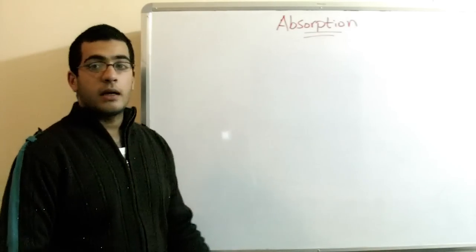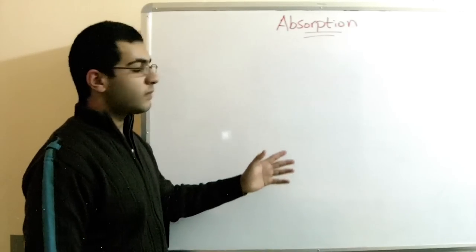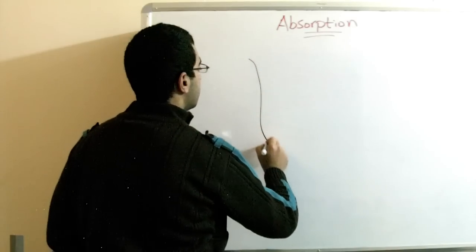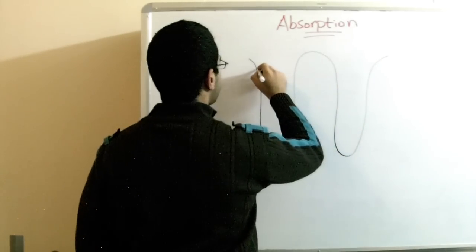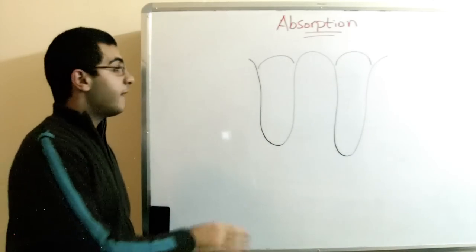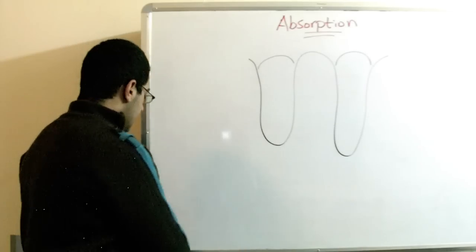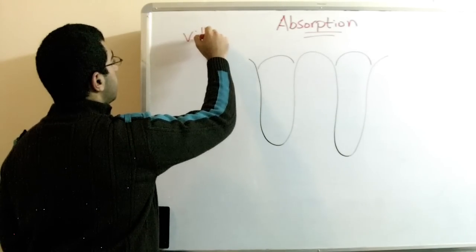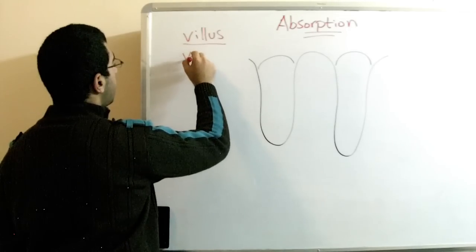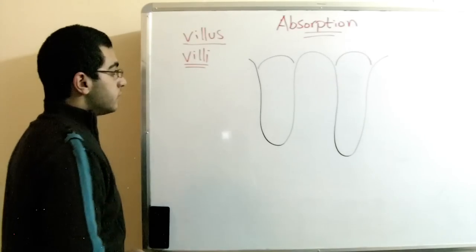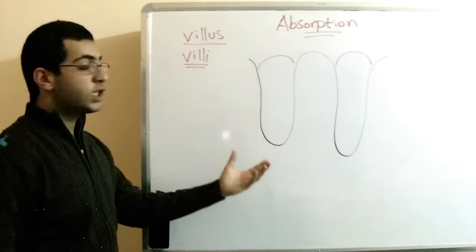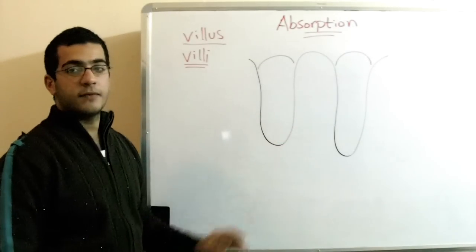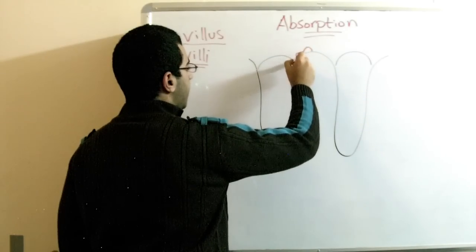So how is the food absorbed through the ileum? The surface area of the ileum from the inside looks something like this. It's full of folds like this, and one fold of this is called a villus. The plural is villi. So these villi are the site of absorption where the food moves from the ileum to the blood vessels. Actually, the outer surface area of the villus...